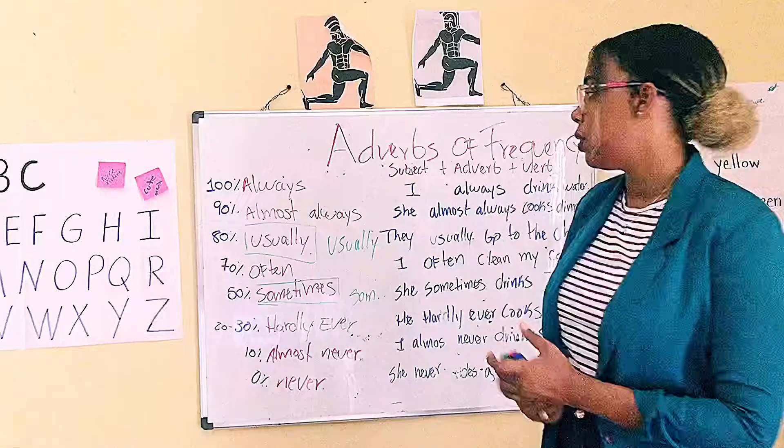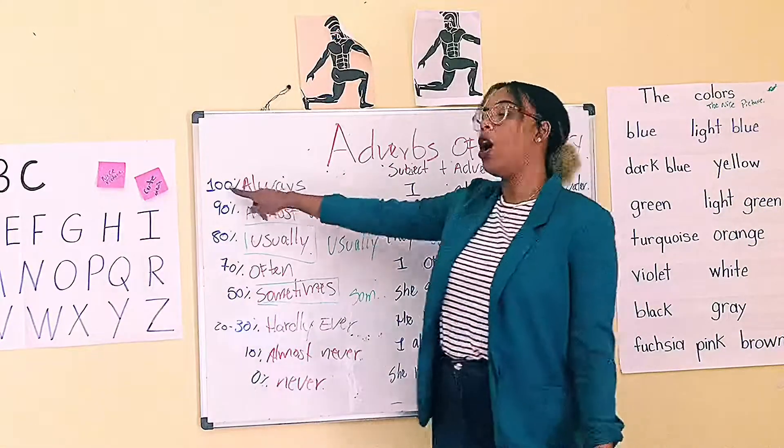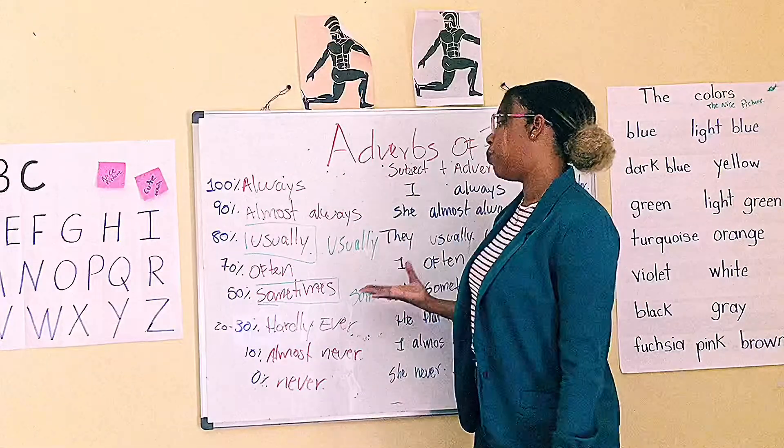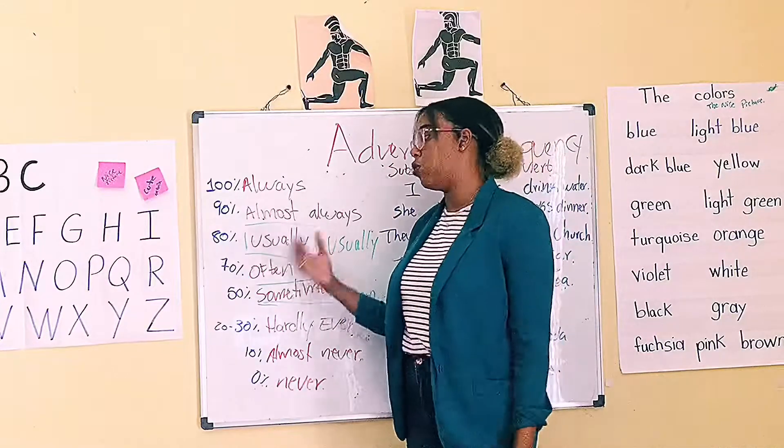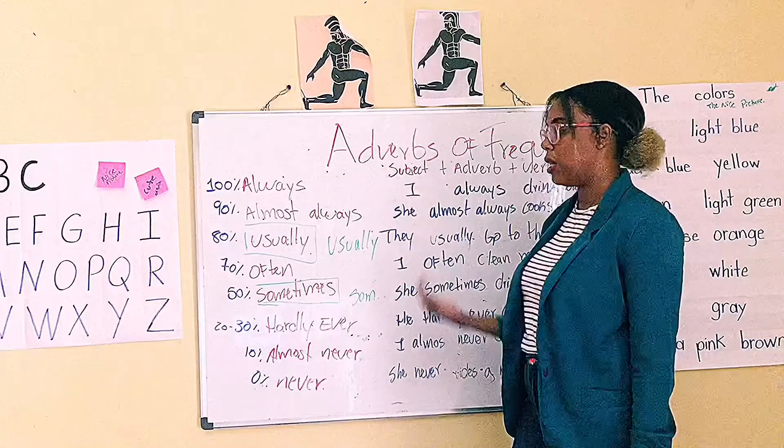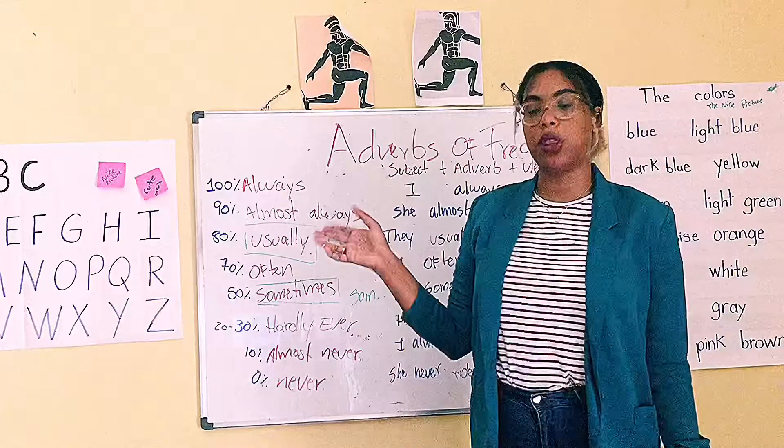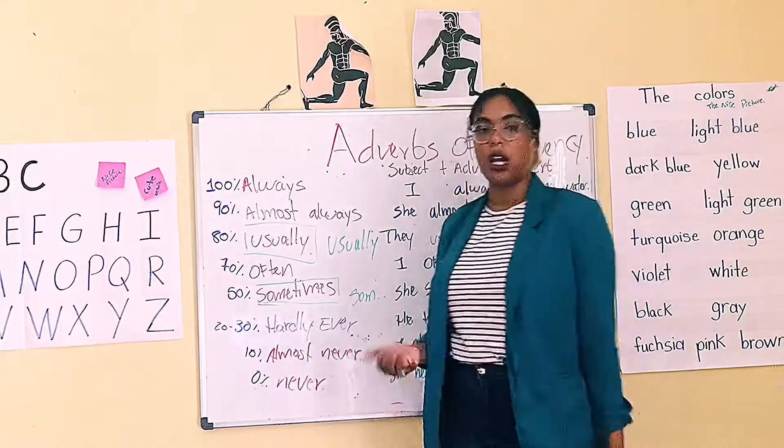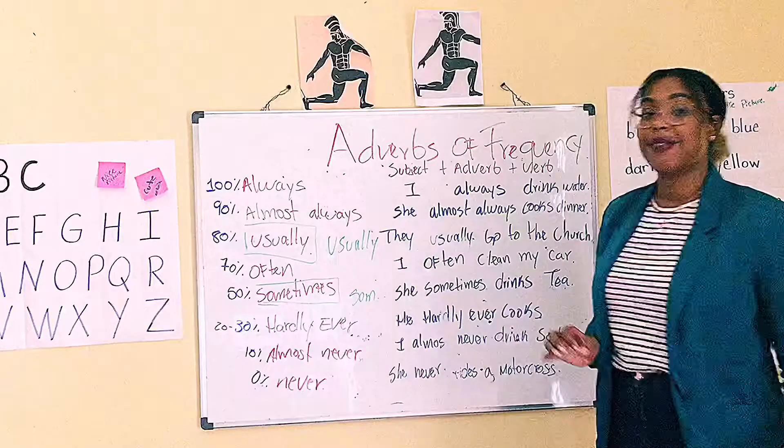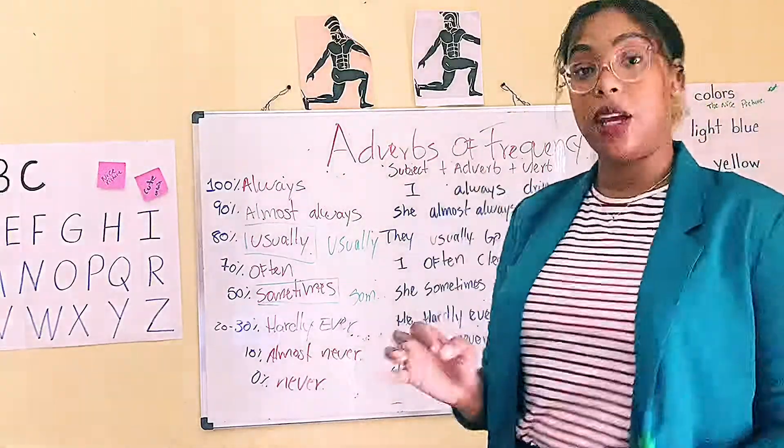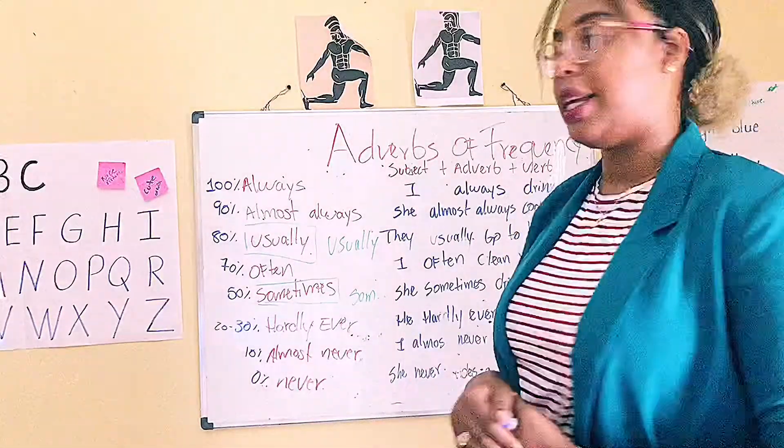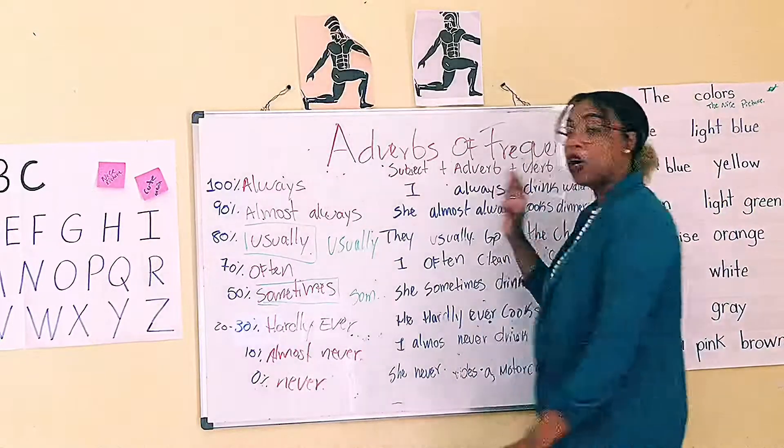Always is around 100%, almost always 90%, usually 80%, often 70%, sometimes 50% or 20% or 30%, almost never 10% or 5%, never is 0%. Okay, let's see. This is the way that you can write a sentence.